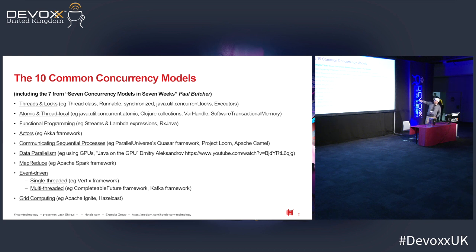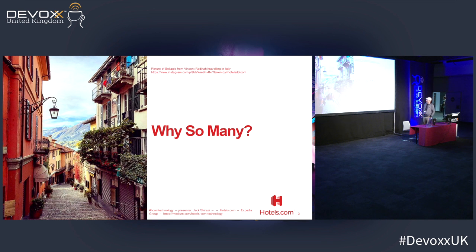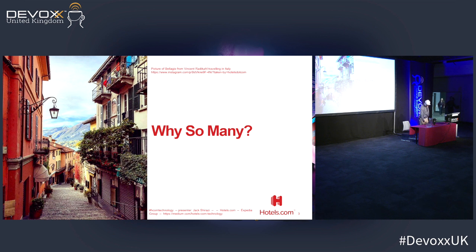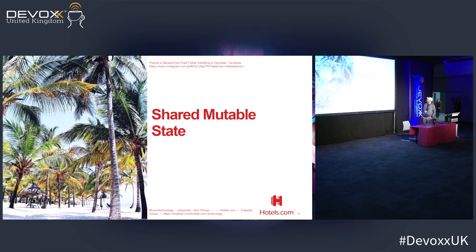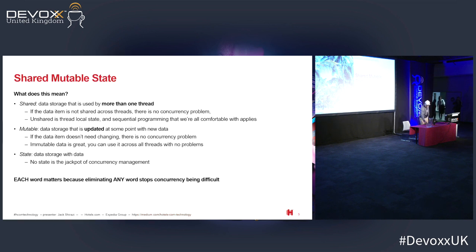I won't go into each of them in detail, but what I'm going to do is explain why there are so many — which is the first question: why are there so many? The reason there are so many is these three words: shared mutable state, which I'll quickly explain.